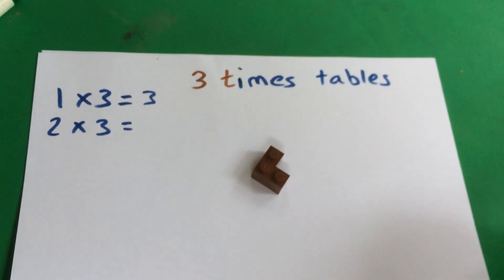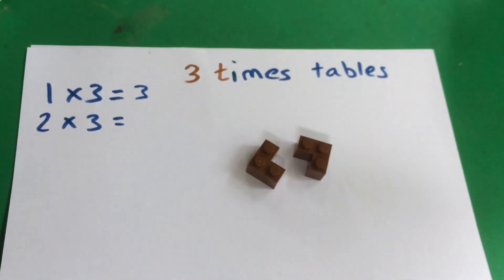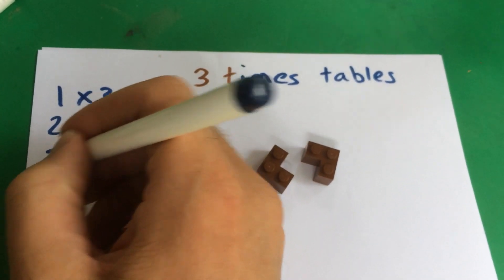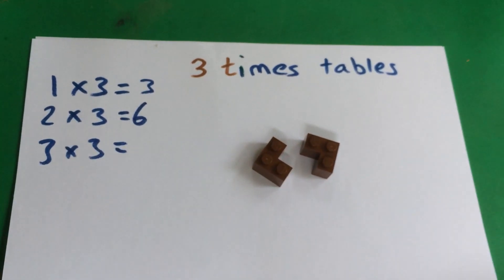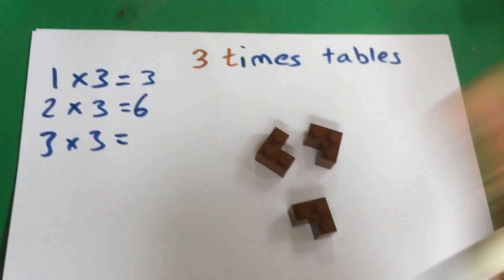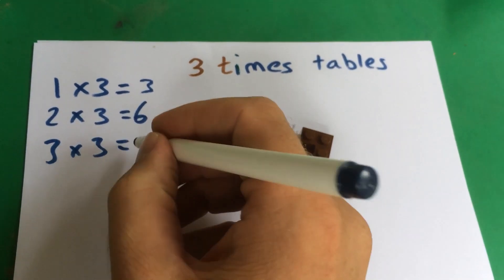If I then have two lots of three, how many little dots? We've got six. Six. If I've got three lots of three. We've got nine. Nine.